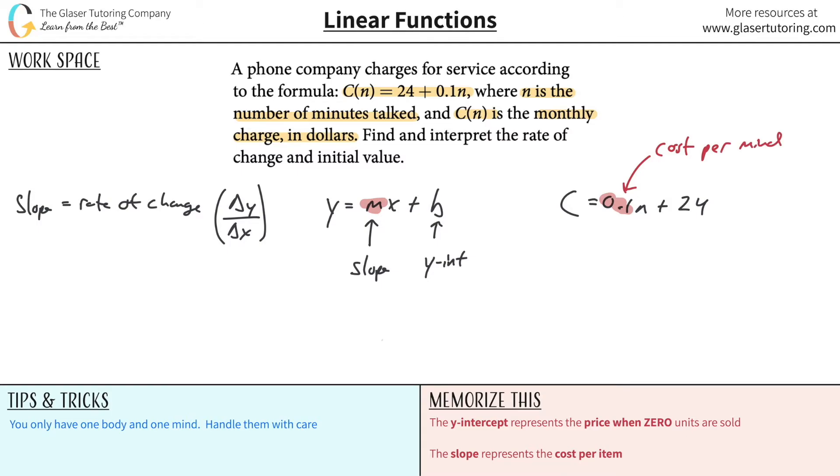In economics parlance, this would be the variable cost. That's the cost that varies. If you talk one minute, you get charged 10 cents. If you talk two minutes, you get charged 20 cents, because it's 2 times 0.1. It's variable, it changes.